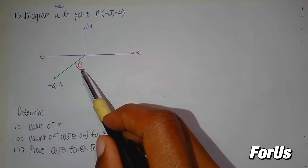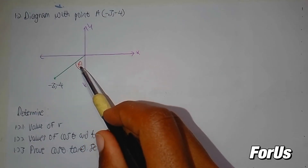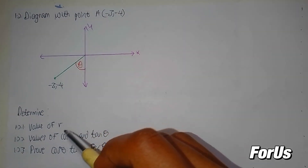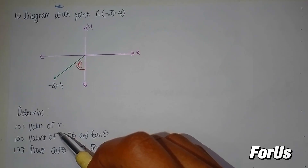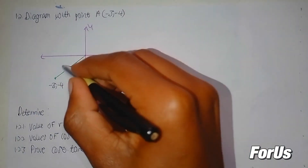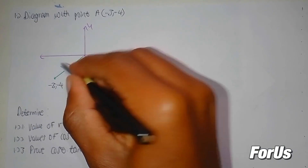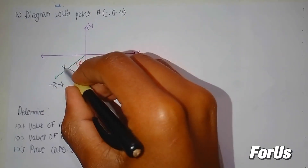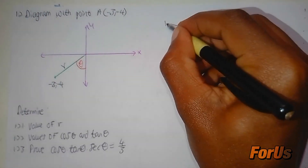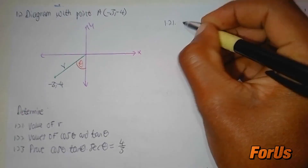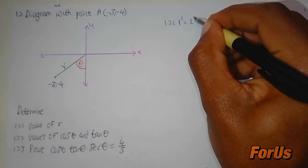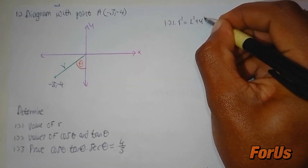For question 1.2, we have a diagram with point A and angle theta. For question 1.2.1, it asks us to determine the value of r. I'll use the theorem of Pythagoras to find r.